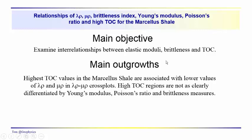These relationships to TOC — the main outgrowth is that TOC doesn't generally, is not generally associated, and can't be differentiated easily by Young's modulus, Poisson's ratio, and brittleness measures. But it does tend to fall out as a low lambda-rho, mu-rho region in the lambda-rho/mu-rho cross plot. And we'll show some examples of this.